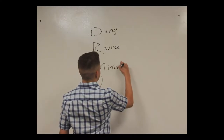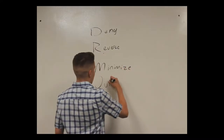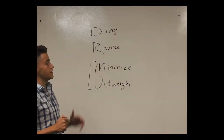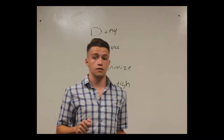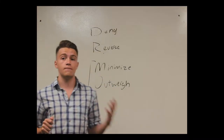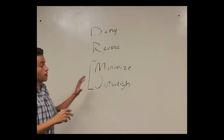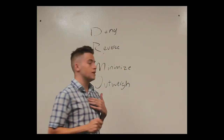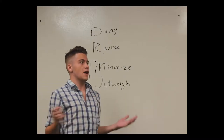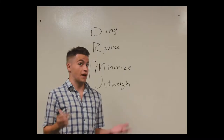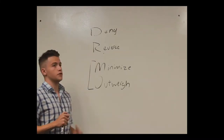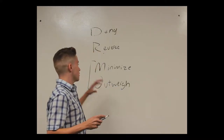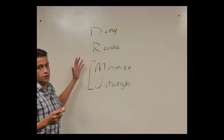Next is minimize, and I'm going to talk about both minimize and O, which is outweigh, at the same time because they're very related. This is when you're doing some comparative stuff. When you're minimizing something you're saying that the other team's argument isn't a big deal because. When you're outweighing something you're saying that your argument is a bigger deal because. A minimize would look like: actually it doesn't matter if Florida's the best state because the United States isn't great — maybe another country's better. For outweigh you could say actually Georgia's the best state and here's why.